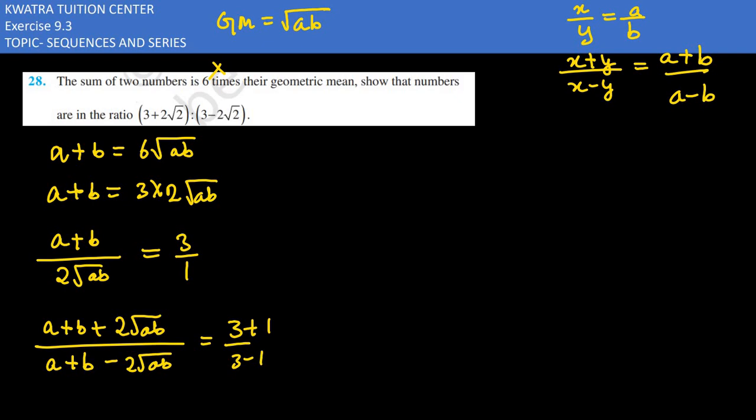This becomes (3+1)/(3-1) = 4/2 = 2/1. If we look at our left side, it looks like (a+b)² whole square.